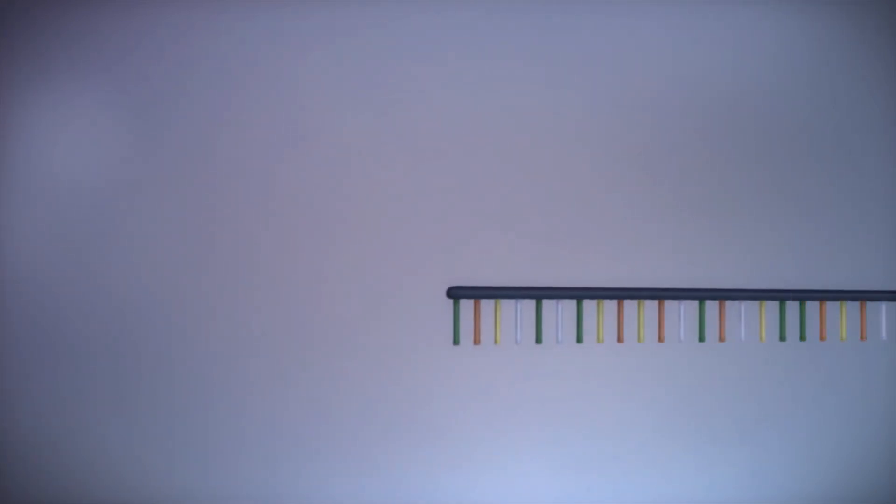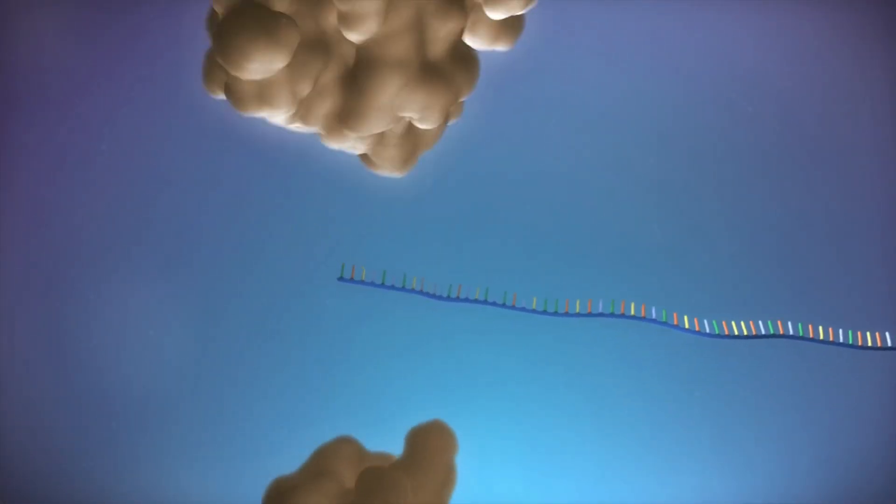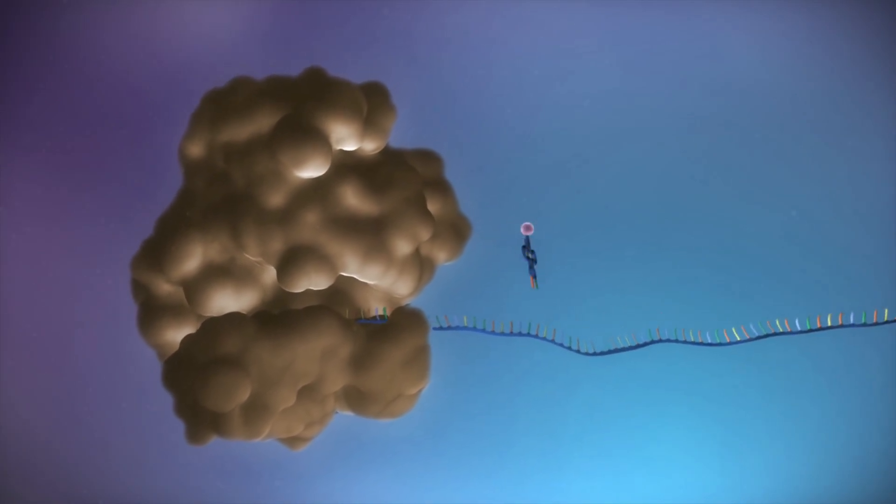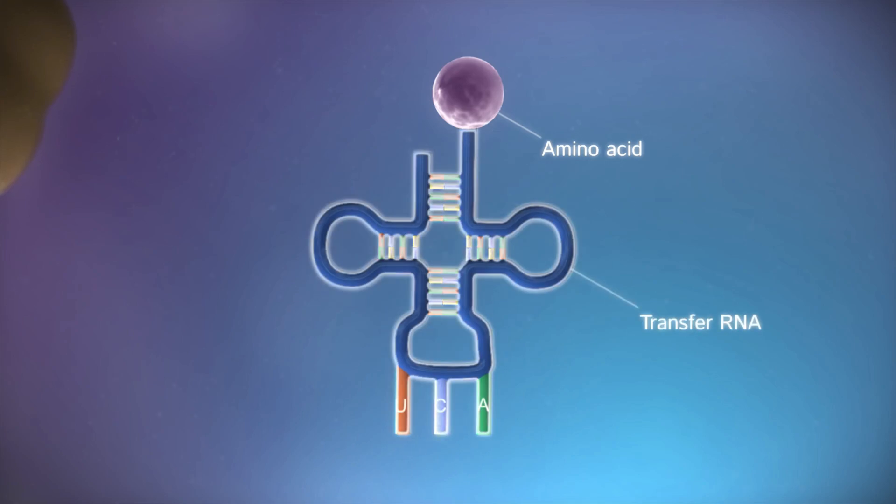The mRNA then leaves the nucleus and goes out to the cytoplasm of the cell. There it finds another set of proteins, a large protein complex made up of about 70 different proteins plus additional RNA molecules. This complex molecule is called the ribosome.